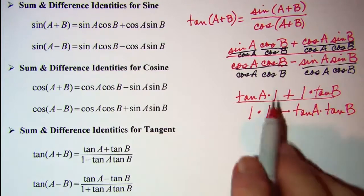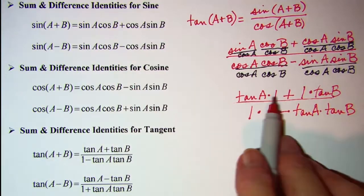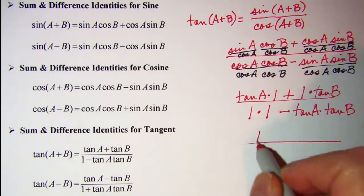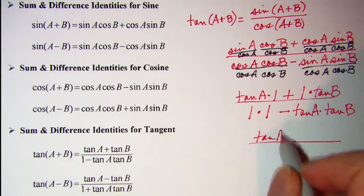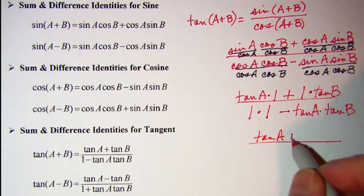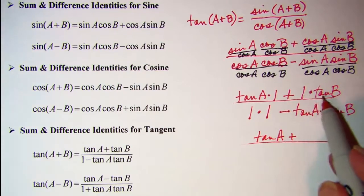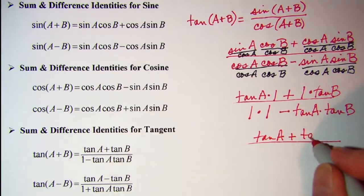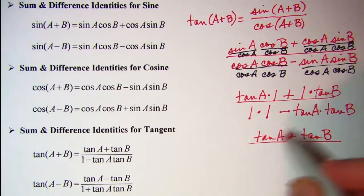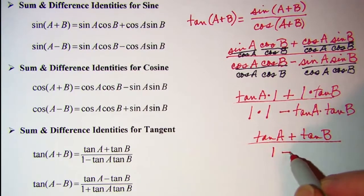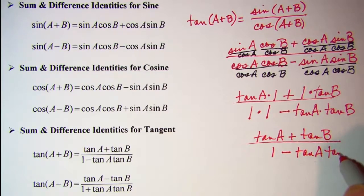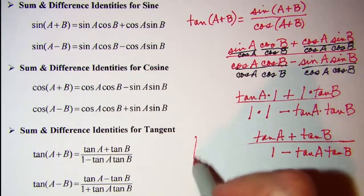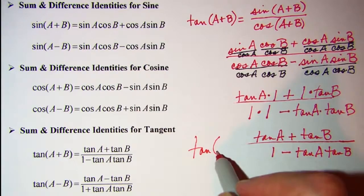Now if we simplify this, tangent A times one is just tangent A, plus one times tangent B is tangent B. And one times one, that's one, subtract tangent A times tangent B. So this is the tangent of A plus B.